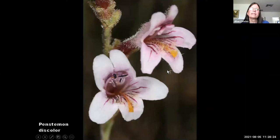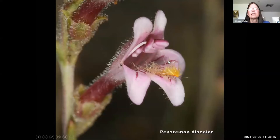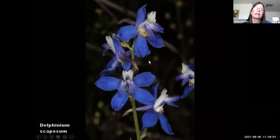Penstemon eatonii flowers point downward and have no landing platform — evolved for a hovering animal like a hummingbird. Contrast these with Penstemon discolor, which has a landing platform for an insect plus nectar guides to direct the insect into the throat, and even fake anthers as an additional lure. The real anthers are further back, but the fake anthers draw insects right into the throat to get their nectar reward and collect pollen.